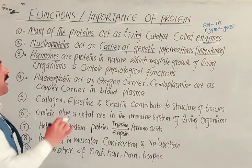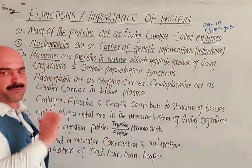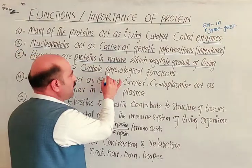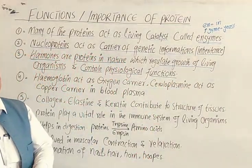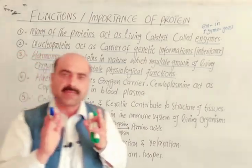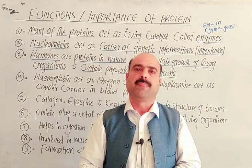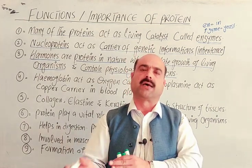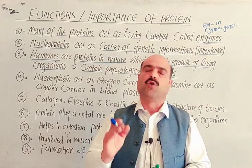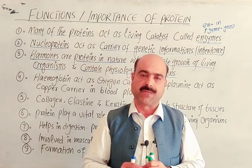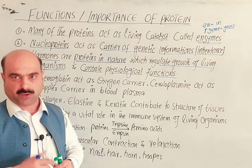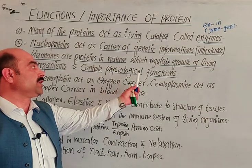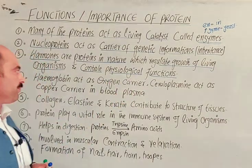Hormones are proteins in nature which regulate the growth of living organisms and control the physiological functions of living thing bodies. Hormones are chemical substances which are produced in one part of the body and control functions in another part. Examples include growth hormones and sex hormones. Basically, hormones as proteins regulate the growth of living things and control various physiological functions of different body parts.